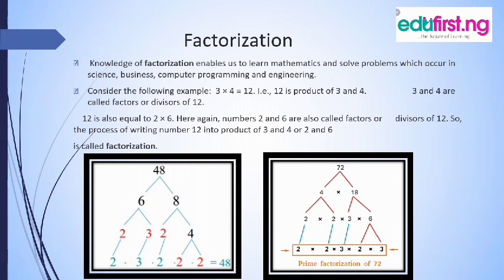Let's check this example. We have 48. 6 multiplied by 8 will give us 48. We can still break this 6 and 8 down. So 6: 2 multiplied by 3 will give us 6. For 8: 4 times 2 will give us 8. We can still break down this 4 — 2 times 2 will give us 4. So that's why we have 2 times 3 times 2 times 2 times 2. This is the barest minimum. We are breaking down these problems to the barest minimum. That's what factorization is all about. This is what we call prime factorization.